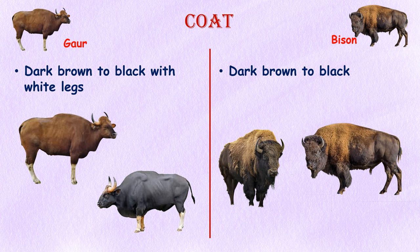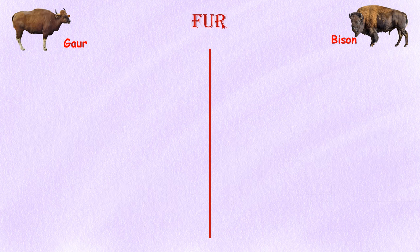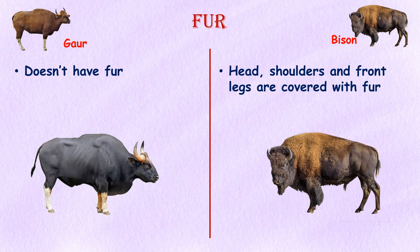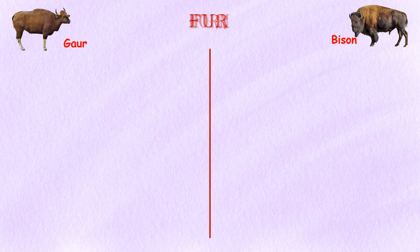Coat: The gaur's coat color varies from dark brown to black, and its legs are usually lighter in color. Bison are generally dark brown, almost black when a new coat is growing in during summer. The Indian gaur doesn't have fur on its body, but the American bison does — the head, shoulders, and front legs look shaggy while the rest of the bison appears shorter and well-trimmed.